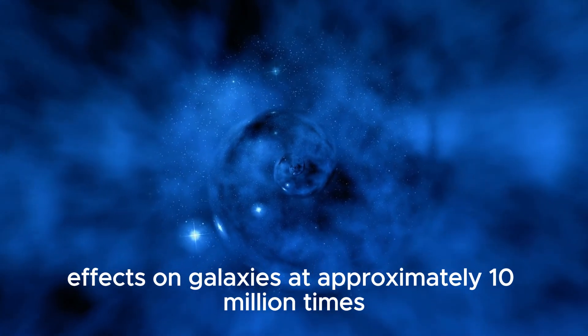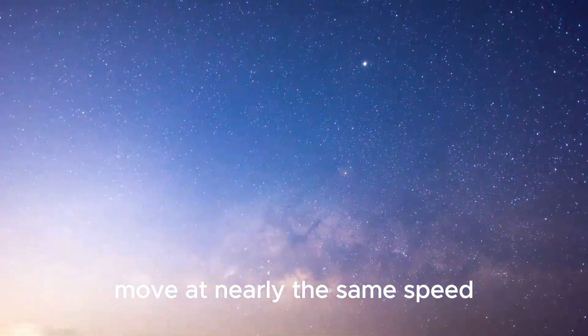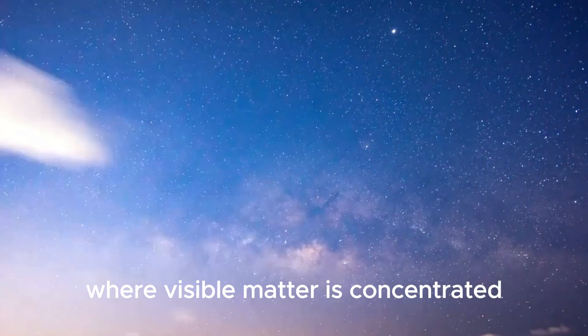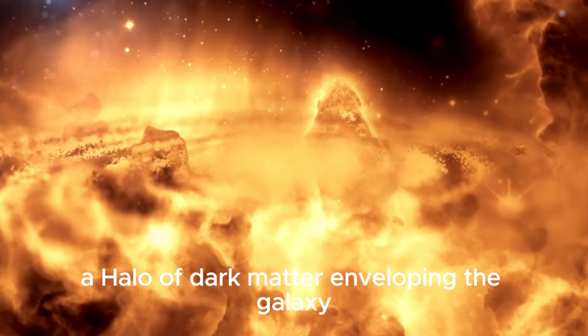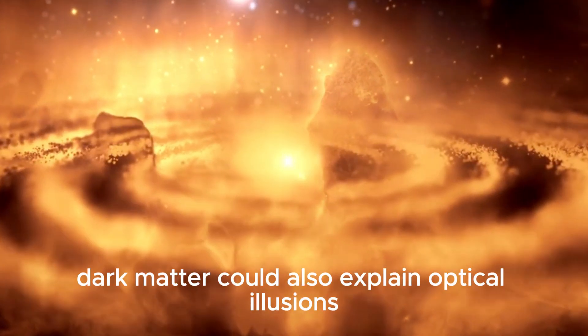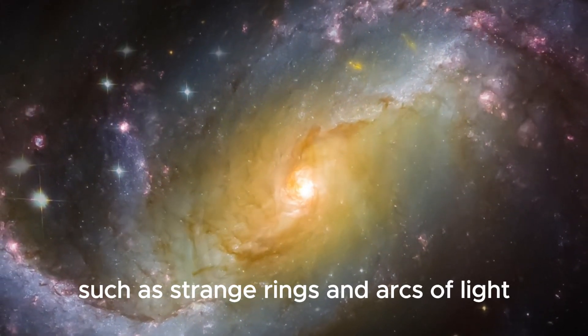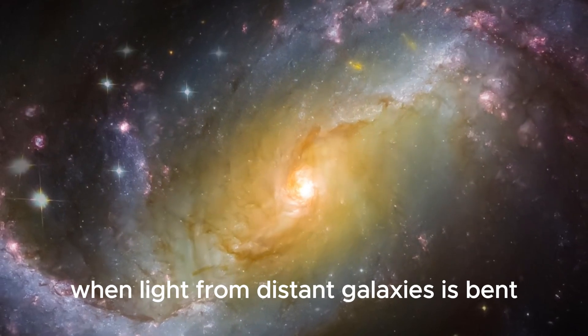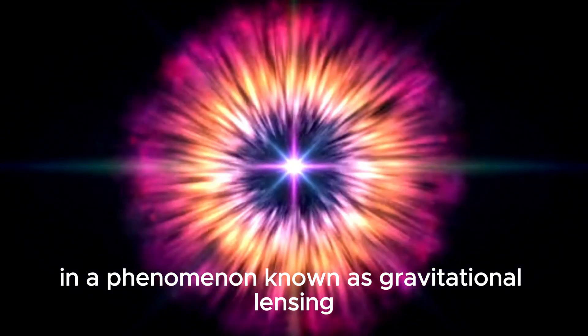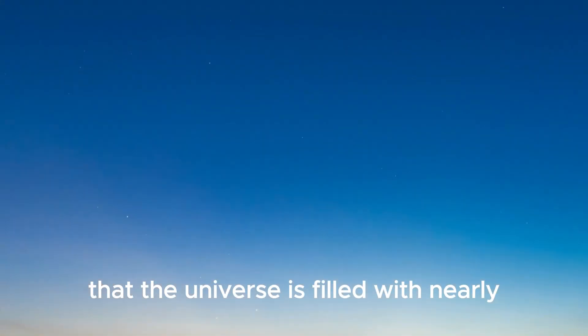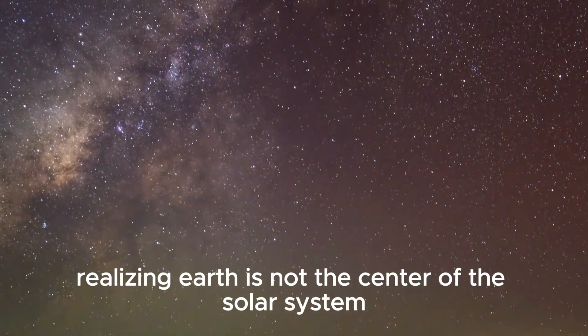Its existence is inferred from its gravitational effects on galaxies. At approximately 10 million times the distance between the Earth and the sun, stars on the edges of spinning galaxies move at nearly the same speed as those near the galactic center where visible matter is concentrated. This phenomenon suggests the gravitational influence of unseen mass, a halo of dark matter enveloping the galaxy. The radical conclusion that the universe is filled with nearly undetectable matter echoes past paradigm shifts, such as realizing Earth is not the center of the solar system.